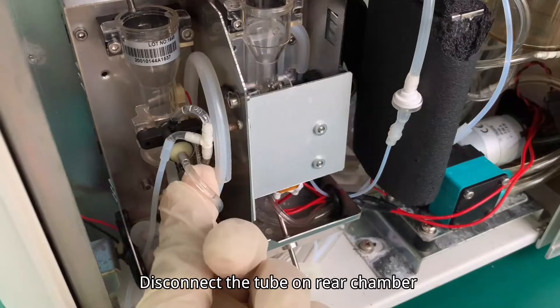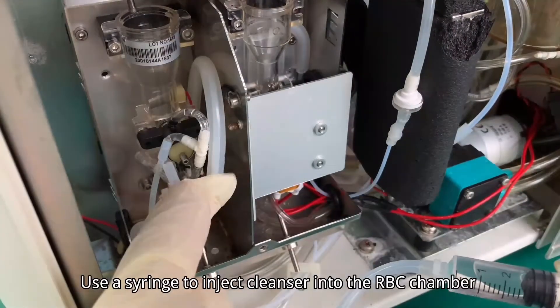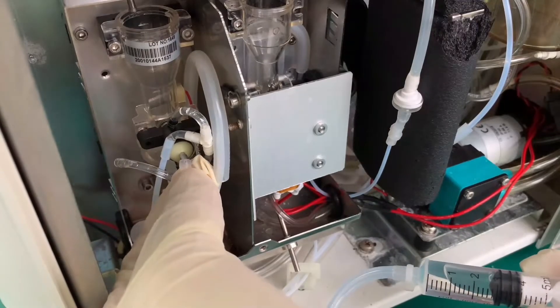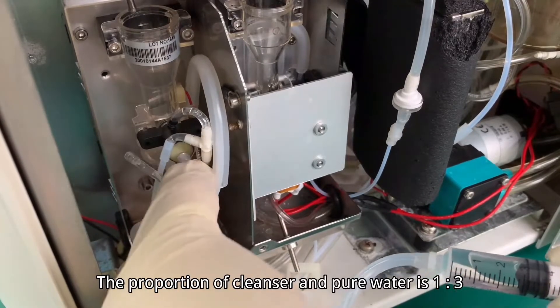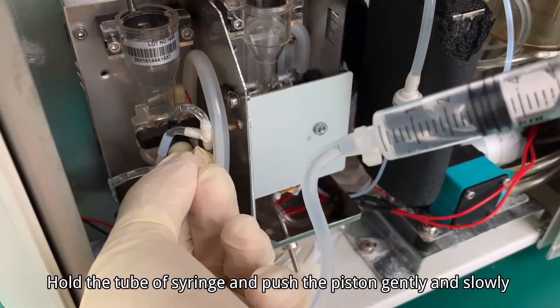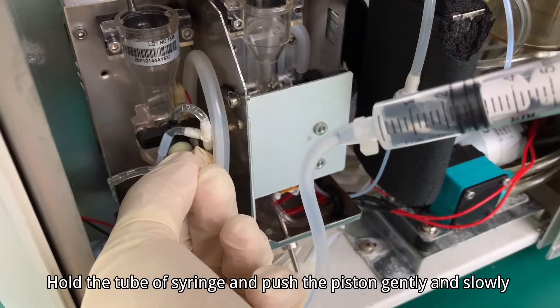Disconnect the tube on the rear chamber. Use a syringe to inject cleanser into the RBC chamber. The proportion of cleanser and pure water is 1 to 3. Hold the tube of the syringe and push the piston gently and slowly.